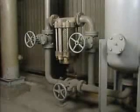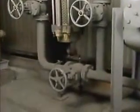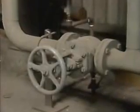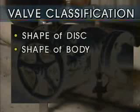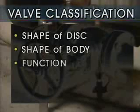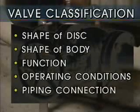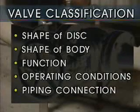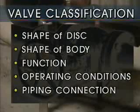Valves come in many shapes and sizes and can be used in many different applications. The way a particular valve is identified can depend on factors such as its physical characteristics or how it's being used. Among the common ways to classify a valve are its shape, function, operating conditions, and connection type. Keep in mind that valves are often identified using more than one of these classifications.